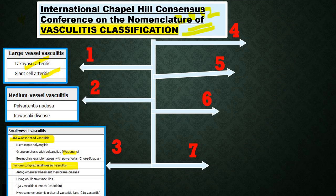Under the immune complex small vessel vasculitis, it includes the anti-GBM disease-associated vasculitis, cryoglobulin vasculitis, and Henoch-Schönlein purpura — also called anaphylactoid purpura — which is more common in children in the first decade.